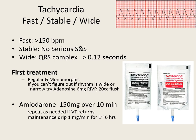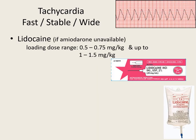Then, hopefully, we convert them and do that maintenance drip of 1 mg a minute for the first six hours. If amiodarone is unavailable and you have lidocaine, your loading dose range is 0.5 to 0.75 mg per kg, up to 1 to 1.5 mg per kg. I'd like to start at 1 mg per kg. If that doesn't help, you may repeat in 5 to 10 minutes at half of your loading dose.